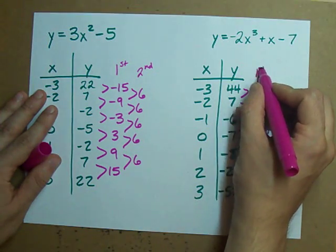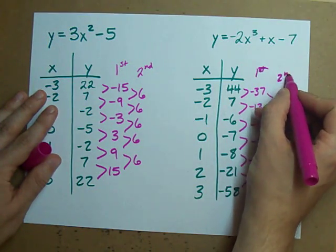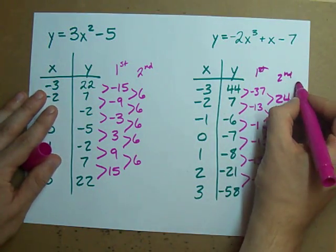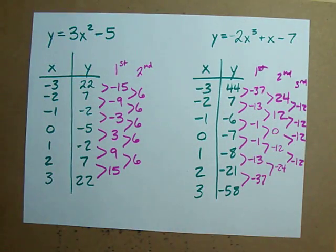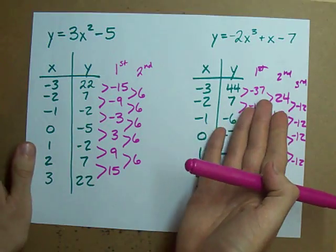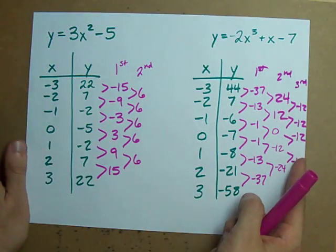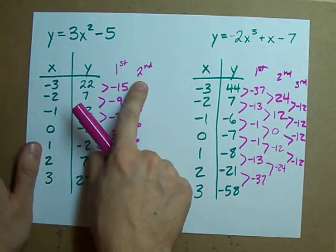Well it just so happens that I expected this. I expected the second differences to be constant here because the equation I used had degree 2.